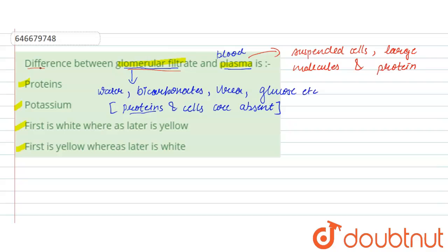So the major difference between glomerular filtrate and blood plasma is proteins. Now let us look at the other options. The next option is potassium. Potassium is an ion, and it is present in both the glomerular filtrate and the blood plasma, so this option is incorrect.